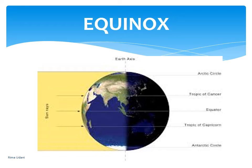On the 21st of March and the 23rd of September, direct rays of the sun fall on the equator. At this position, neither of the poles is tilted towards the sun. As you can see on your screen, both halves of the earth experience equal days and nights. This is called an equinox.